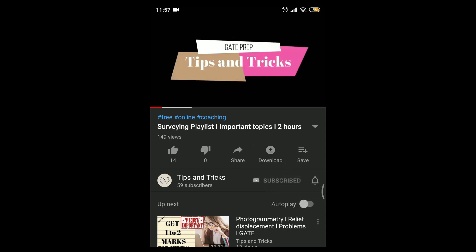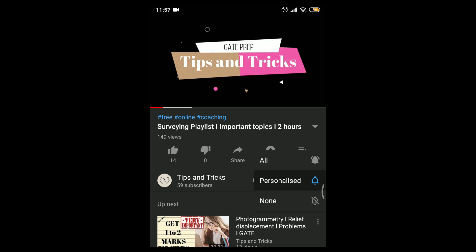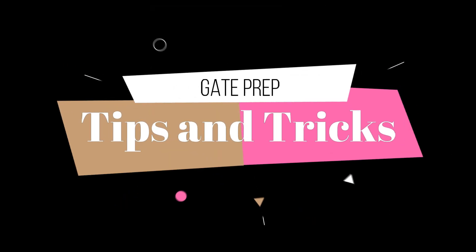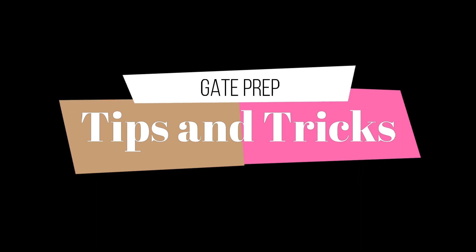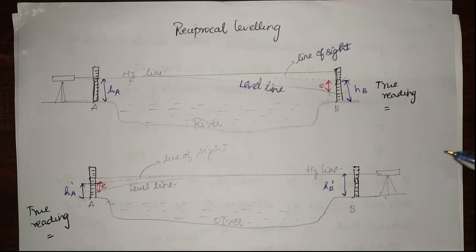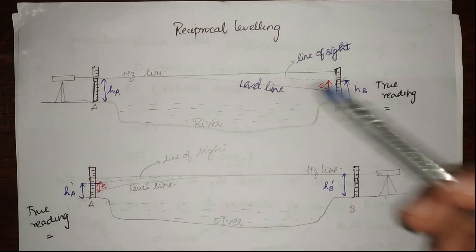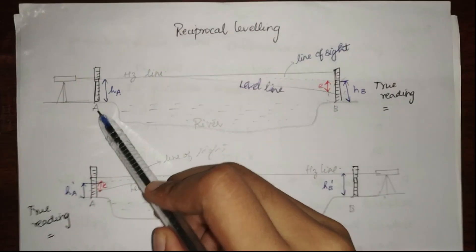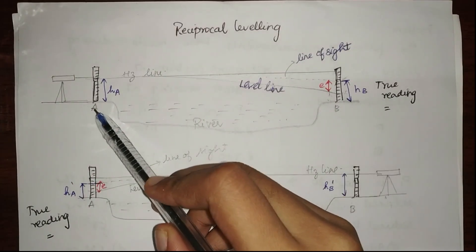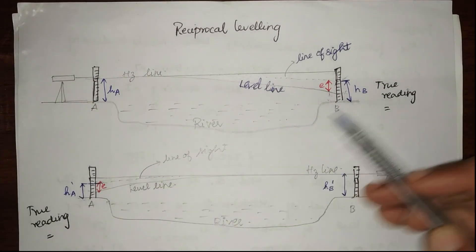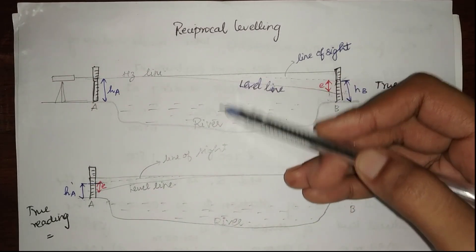We have already seen the error due to curvature — I have the link to it in the description box below. In this video we're going to see how we can eradicate it. You can see that we have a river here. I already know the reduced level at A; I need to find the reduced level at B.